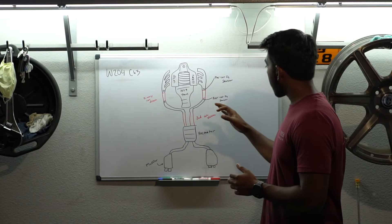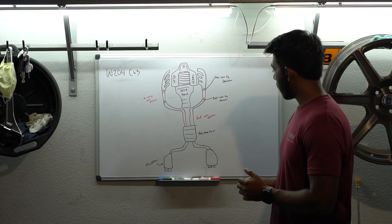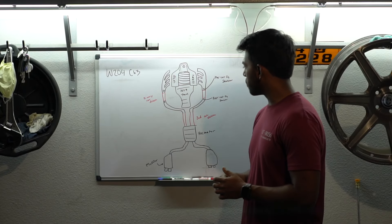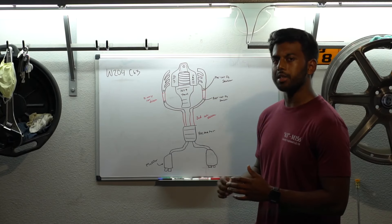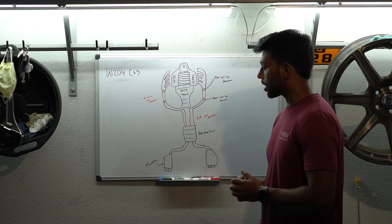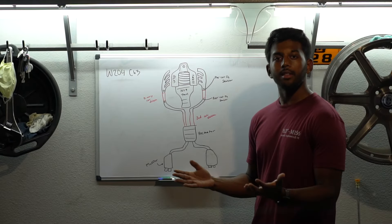And, next up we got the cat delete, primary and secondary, but maintaining the stock resonator. Pretty interesting setup. Not really common from what I understand. Usually, people usually leave the primary cats alone unless they're, you know, already gotten rid of the resonator. But, yeah. Here we have primary cat delete and secondary cat delete with the stock resonator. Here's what that sounds like.